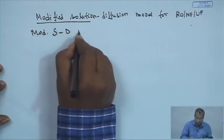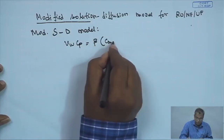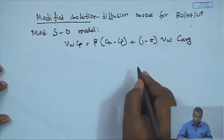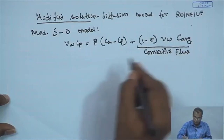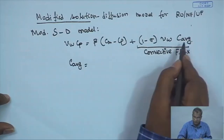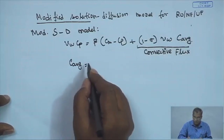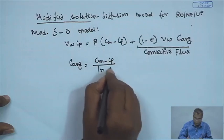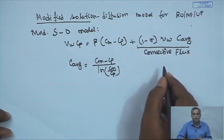The modified solution diffusion model can be written as: V_w × C_p = β(C_m − C_p) + (1 − σ) × V_w × C_average. This additional term takes care of the convective flux through the membrane. Here σ is the reflection coefficient, V_w is the permeate flux, and C_average is the average solute concentration in the membrane matrix — specifically the log mean concentration: C_average = (C_m − C_p) / ln(C_m / C_p). This is a more realistic model for solute flux in open nano filtration or ultra filtration membranes.